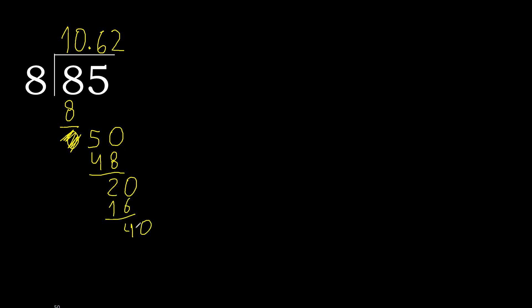Subtract. Complete. 40. 8 multiplied by 5 is 40. Subtract — 0. Therefore finished: 85 divided by 8 is the result shown here.